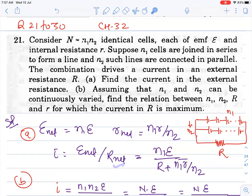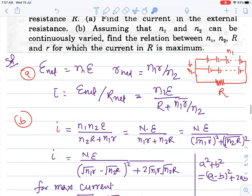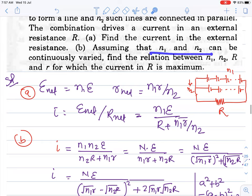Now we will use Ohm's law: i = net EMF upon net resistance. Net EMF is this, net resistance is this - internal plus external added together. This is the first part's answer.